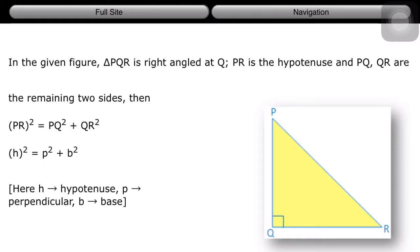Here we can see a right-angled triangle PQR where Q is the right angle. Right angle means the angle is equal to 90 degrees.